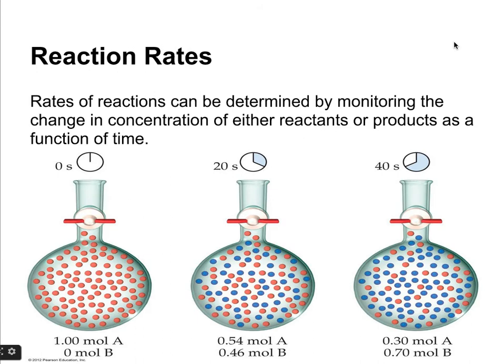The rate of a reaction can be determined by monitoring the change in concentration of either the products or the reactants as a function of time. If we look at time zero here, before the reaction has started, we've got one mole of A, the reactants, and zero moles of B, the products.